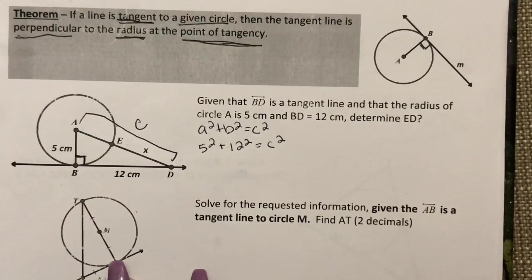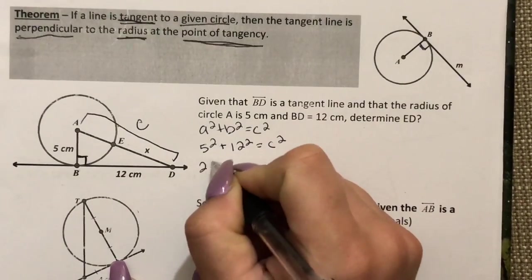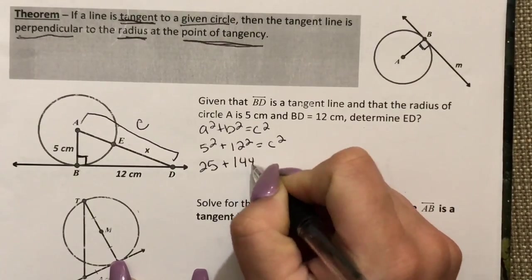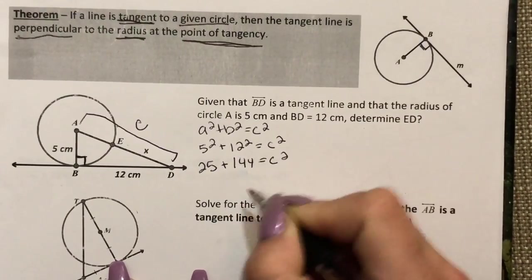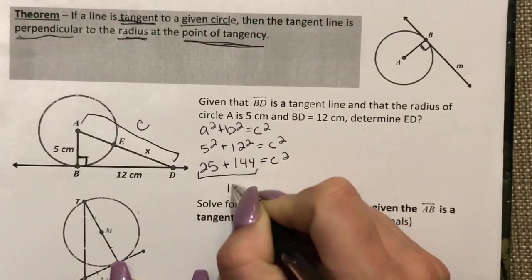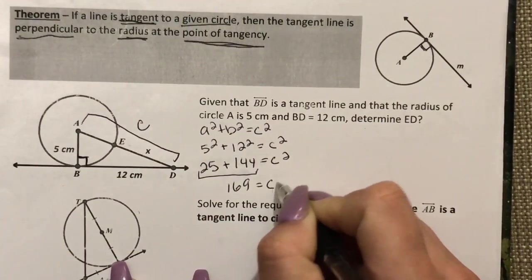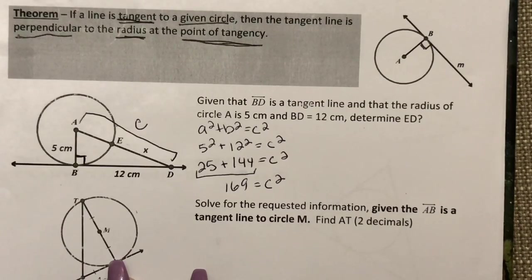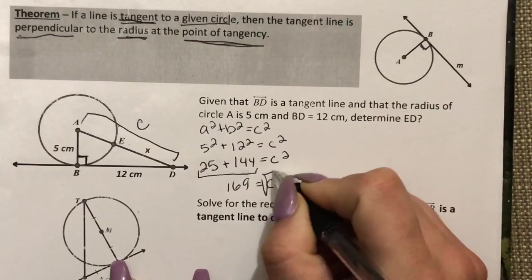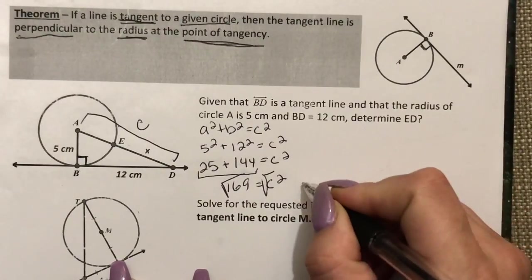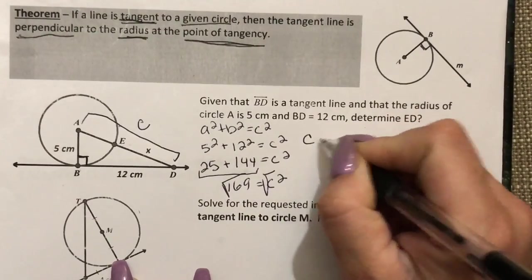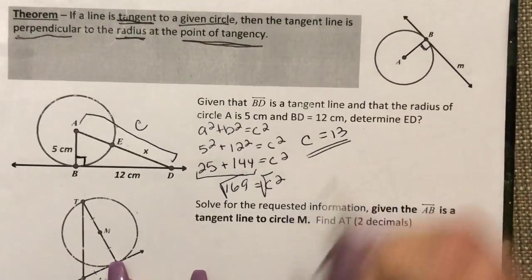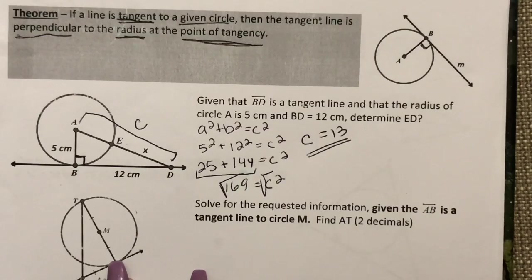Now I'm going to plug the numbers in and solve accordingly. So 5 squared is 25, 12 squared is 144. When I add these two numbers together I get 169, and the last step to get C by itself here is to take the square root.